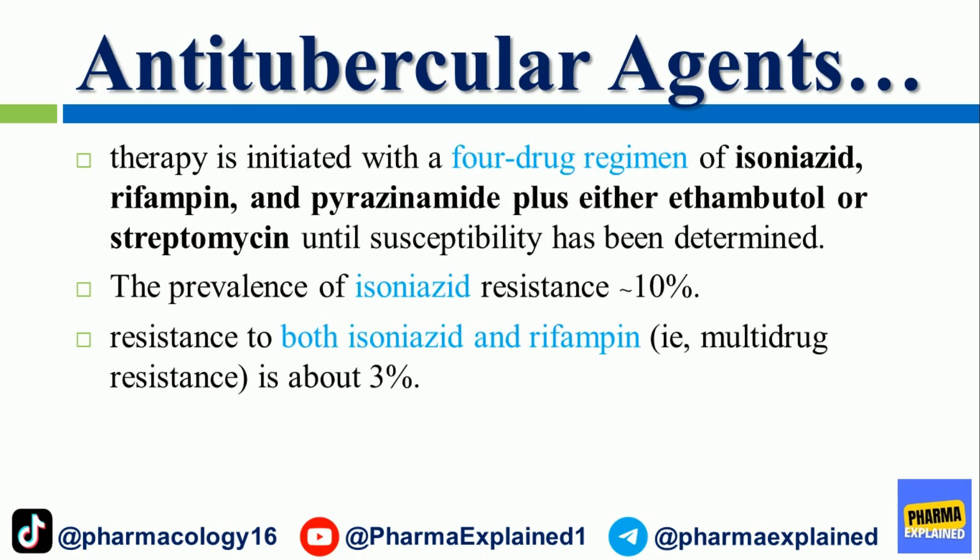Therapy is initiated with a four-drug regimen of isoniazid, rifampin, and pyrazinamide plus either ethambutol or streptomycin until susceptibility has been determined. The prevalence of isoniazid resistance is 10%. Resistance to both isoniazid and rifampin, i.e., multi-drug resistance, is about 3%.